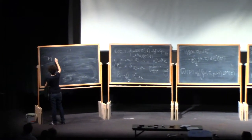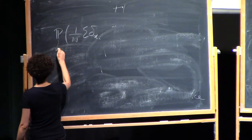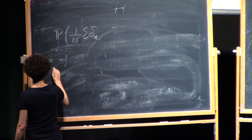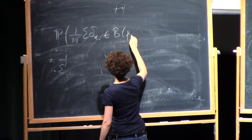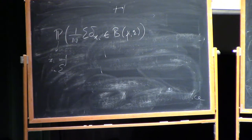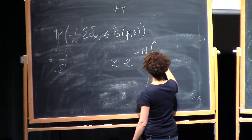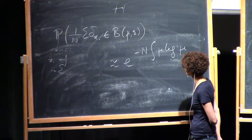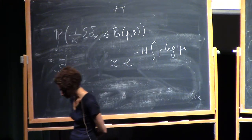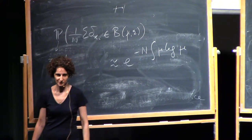Sanov's theorem says that if you take points that are uniformly distributed in sigma, the probability that the empirical measure lands in a ball centered at mu and of radius epsilon — for some topology on probability measures — is essentially like exponential minus n times the integral of mu log mu. It's the entropy that comes out; the integral of mu log mu is the entropy. So the volume of configurations whose empirical measure looks like mu is logarithmically related to the entropy of mu.